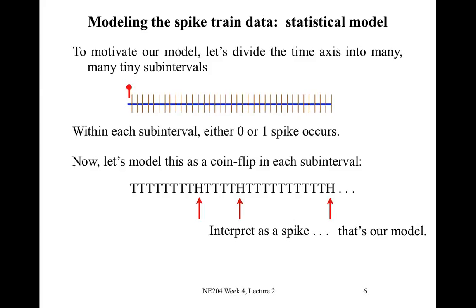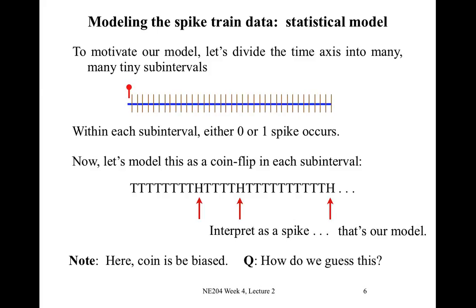So that's our statistical model of spiking — these coin flips. In this case we might conclude the coin is biased because we have so many T's and so few H's. We flip our biased coin once for each bin: heads is a spike, tails is no spike. We think this coin is probably biased because we see so many T's and very few H's; an unbiased coin would give 50/50.